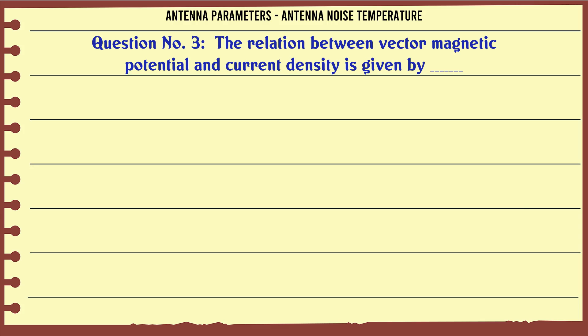The relation between vector magnetic potential and current density is given by: Option A: dot A equals J. Option B: A equals H. Option C: nabla squared A equals J. Option D: nabla squared A equals H. The correct answer is nabla squared A equals J.